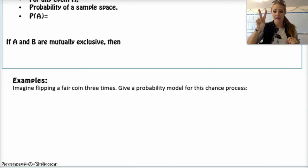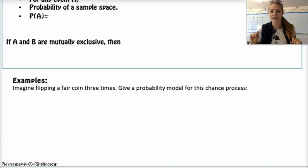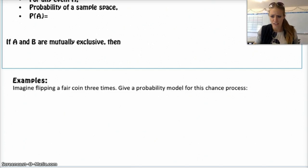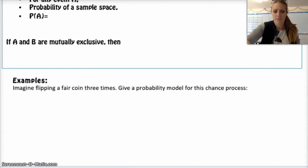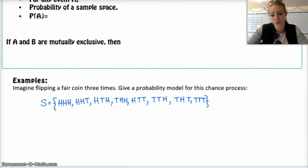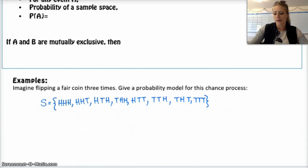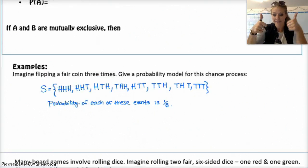Or you could get heads-tails-tails, tails-heads-tails, tails-tails-heads, or tails-tails-tails. You end up with eight different options — that would be your sample space. The probability of each one of those things occurring is exactly the same as the rest of them, so the probability of any of these events occurring is one out of eight. That's your probability model.